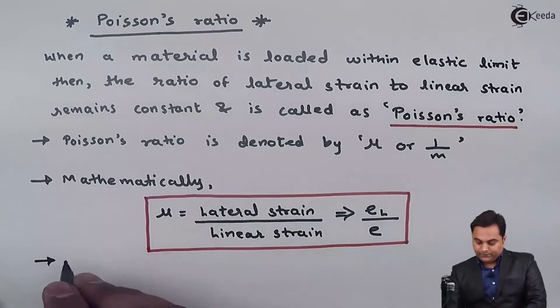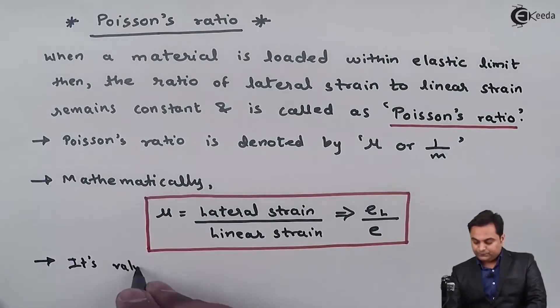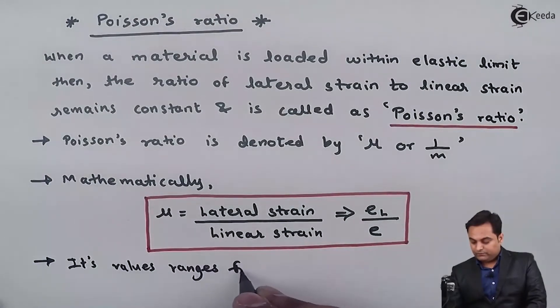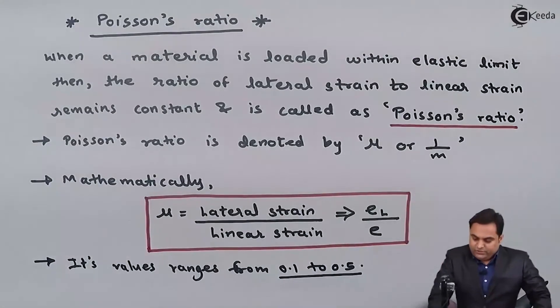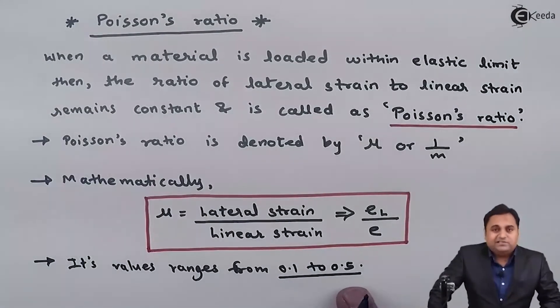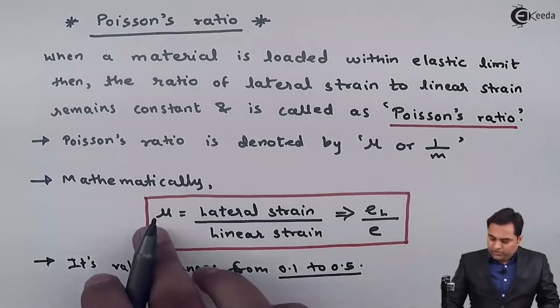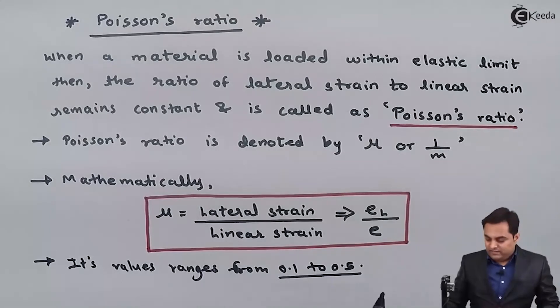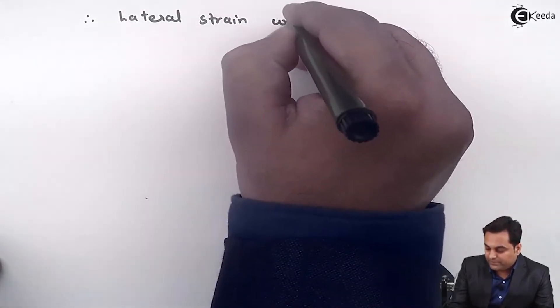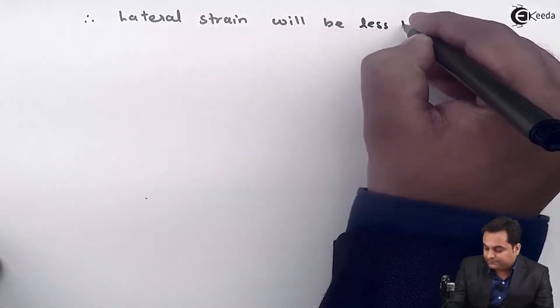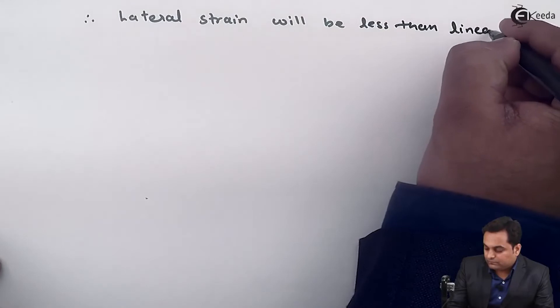The value of Poisson's ratio ranges from 0.1 to 0.5. Since it is less than 1, we can see that if Poisson's ratio is less than 1, it means that lateral strain will be less than linear strain.